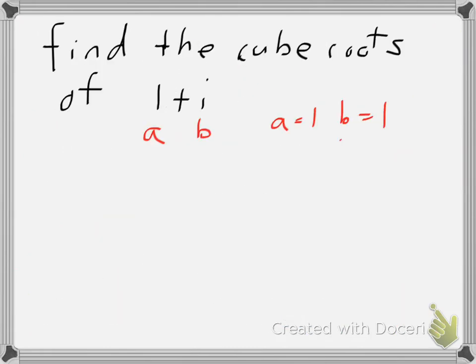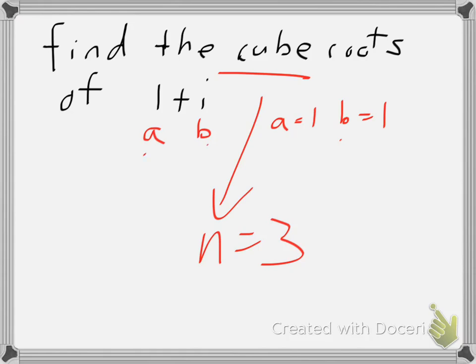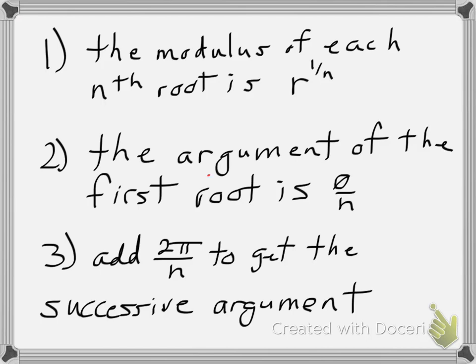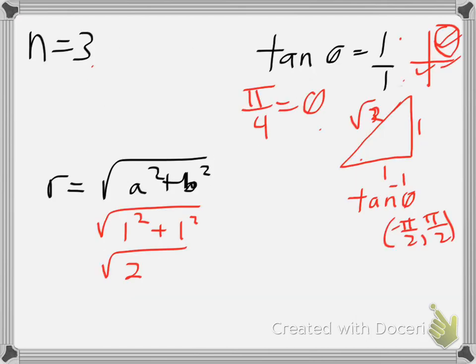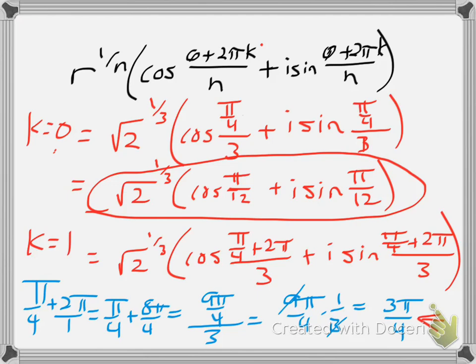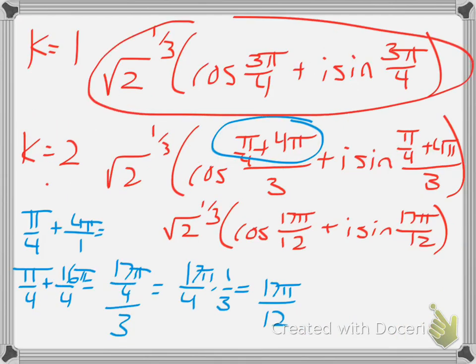With this kind of problem, they are long. Cube root implies I have an n of 3. I need to determine what n is, and determine my a and b based on my complex number. This is the formula that we use, and when k varies from 0, 1, 2, up to n minus 1, that means we have different arguments for each root, and we'll have 3 roots in this case. So we need to determine n, r, and theta, and then it's a matter of putting them all into the formula using k to simplify. We have our 3 roots here, here, and here.